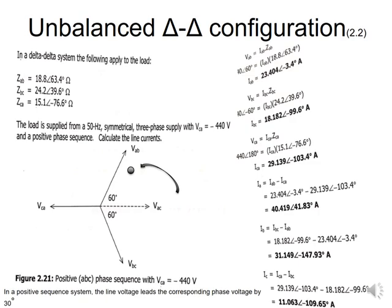I then do the calculations to find iab, ibc, and ica using Ohm's law. Once I have those phase currents, I calculate the line currents ia, ib, and ic using the same formulas as in the previous example. In this second example, they did not require us to draw a phasor diagram — just to calculate the line currents.